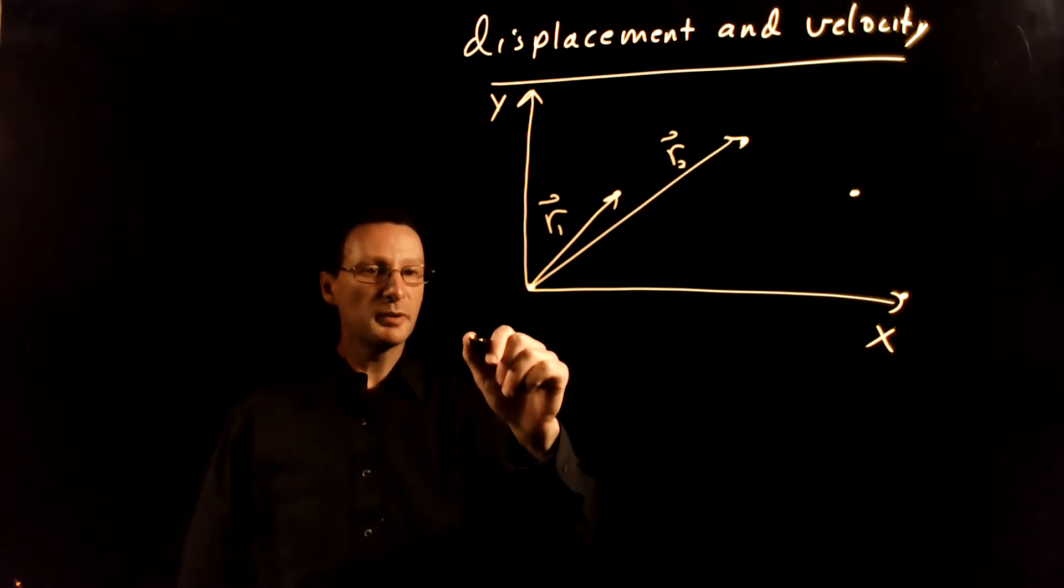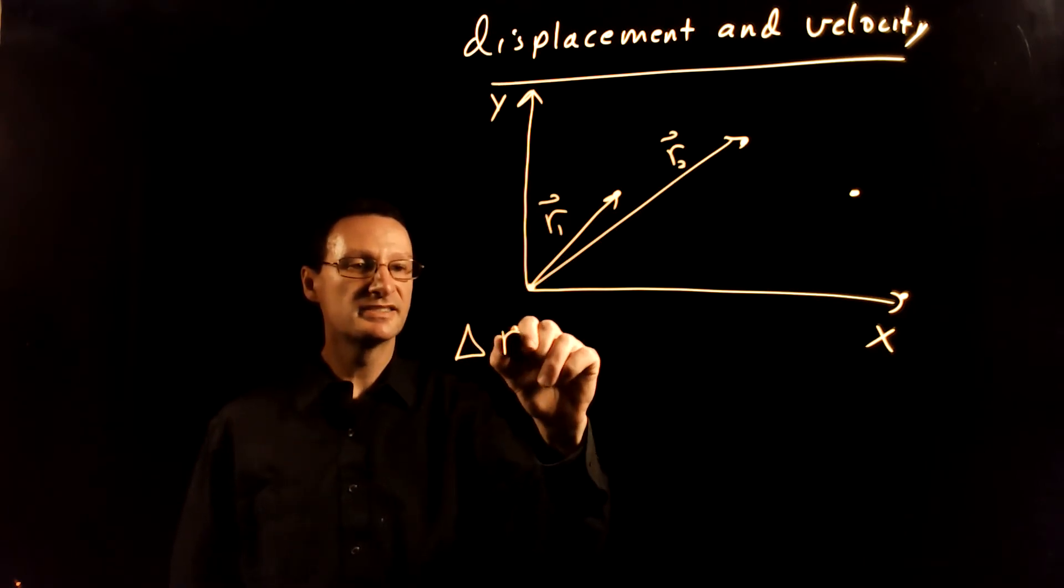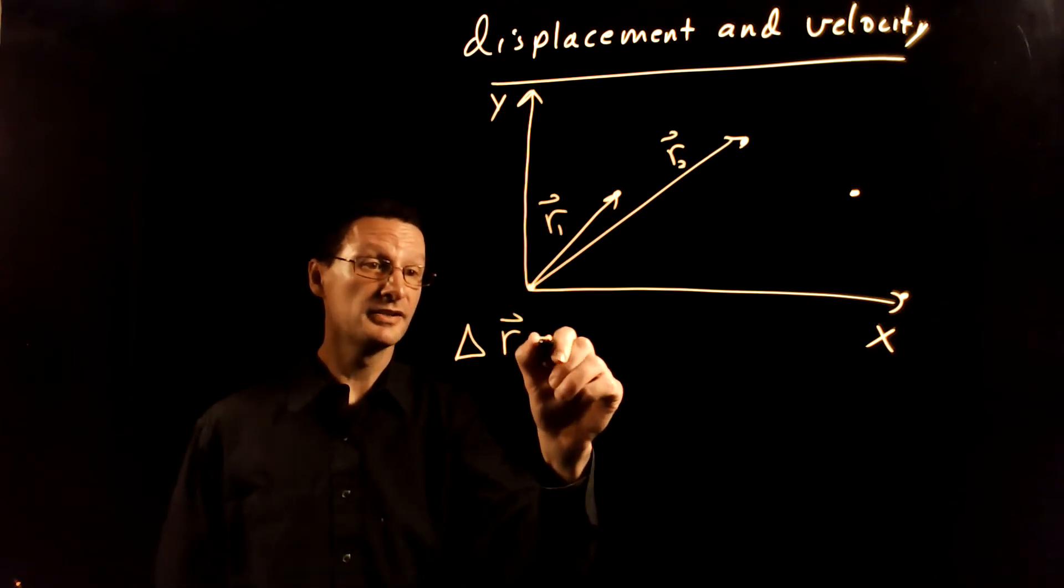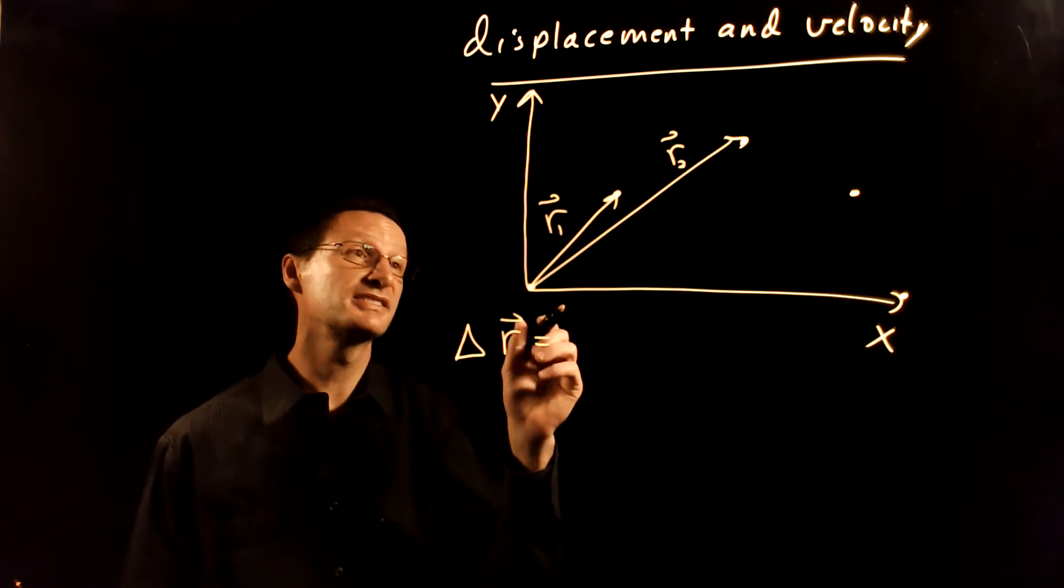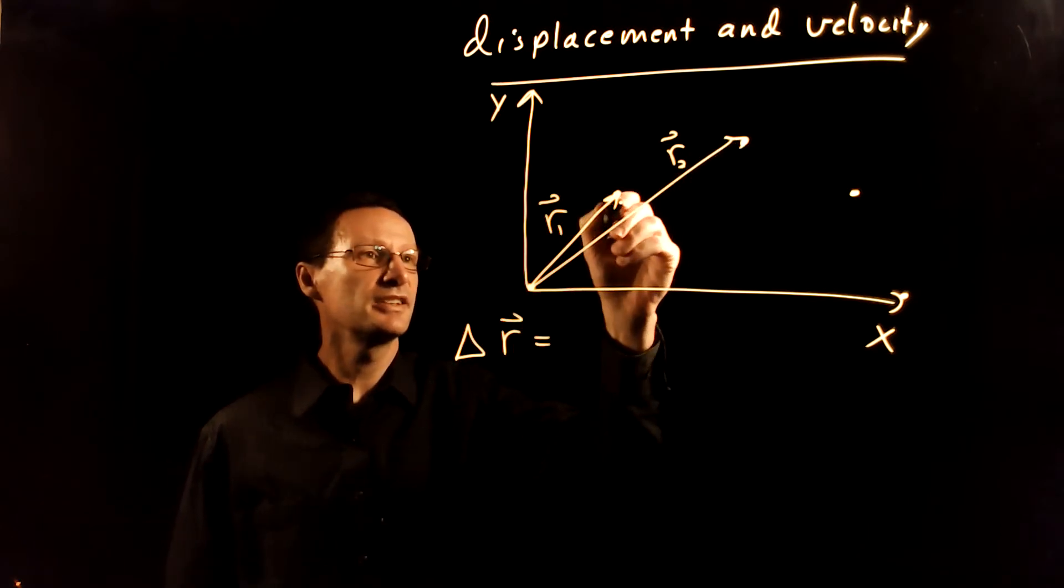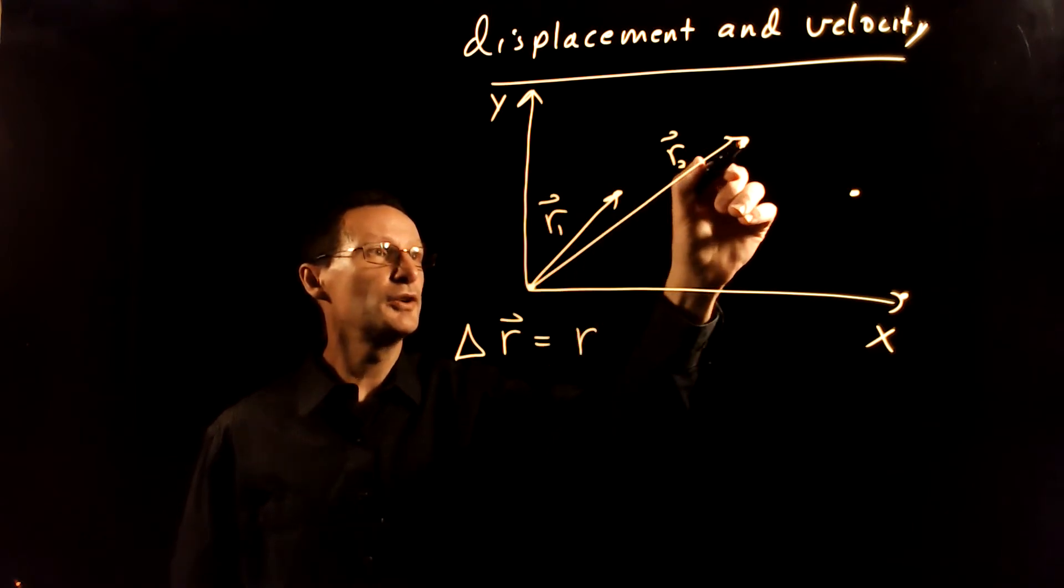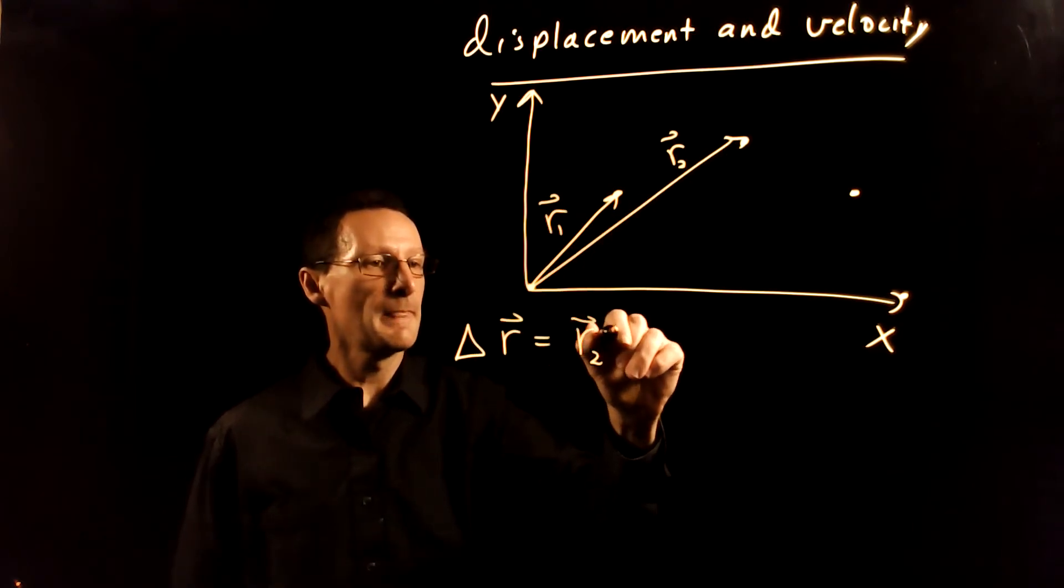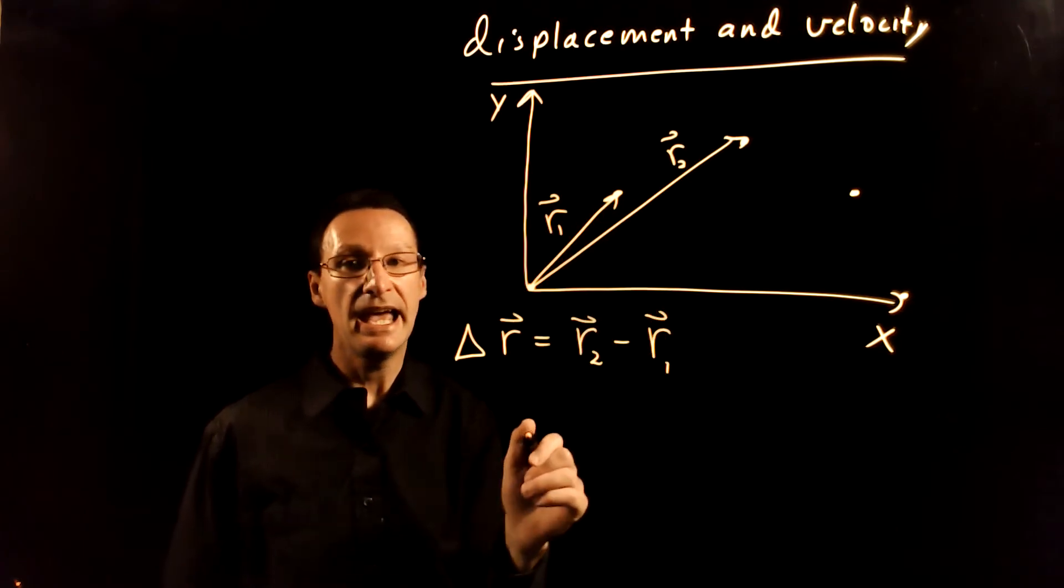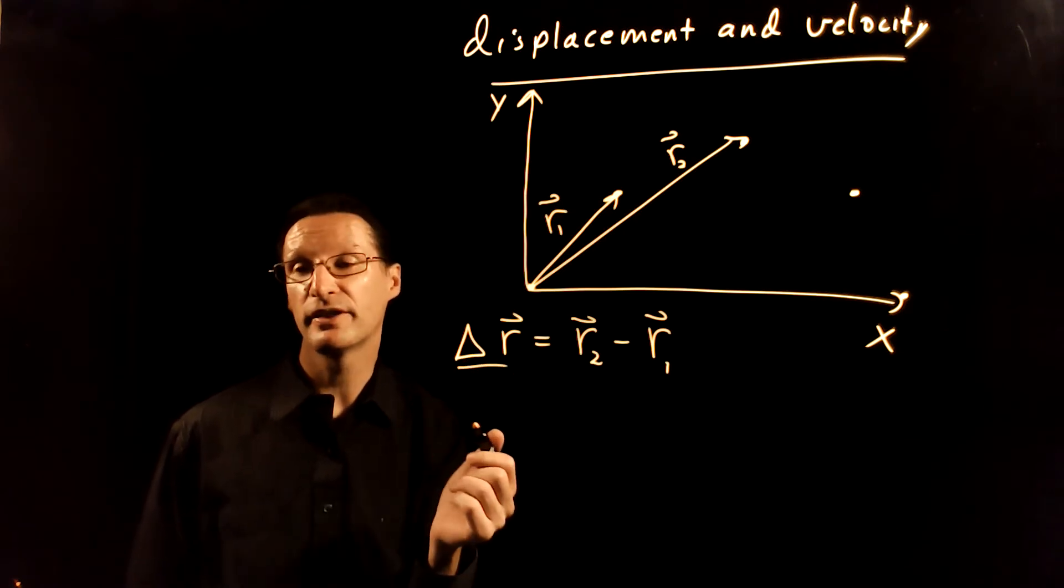What we want to do is think about the displacement vector. The displacement vector is the difference between these two, or delta R. Remember, the delta symbol tells us it's final minus initial. So the final point is here and the initial point is here. That's going to be R2, the final point, minus R1, the initial point. And again, just because these are vectors, this definition still holds.